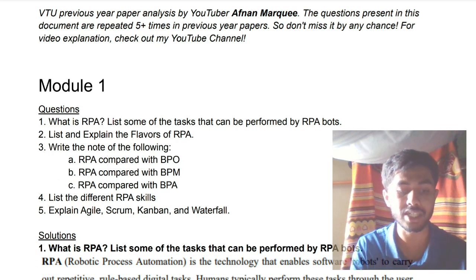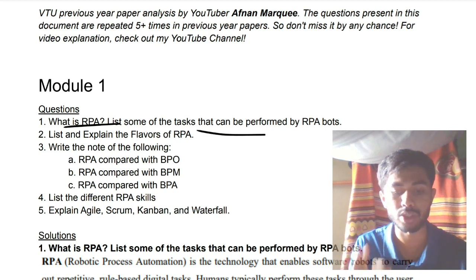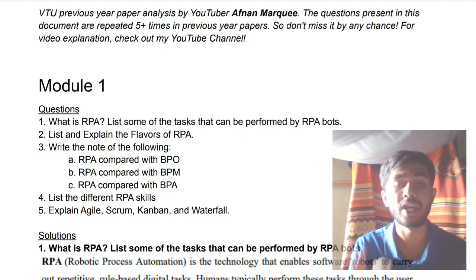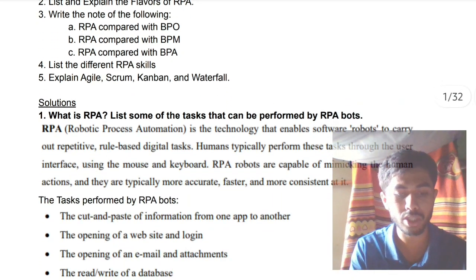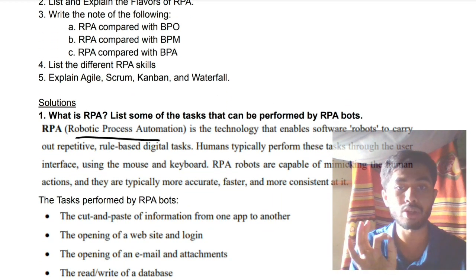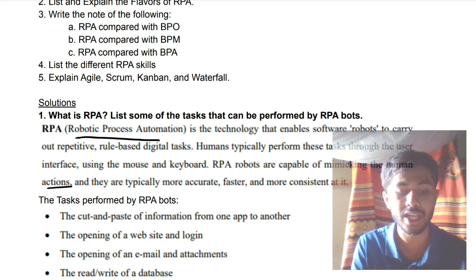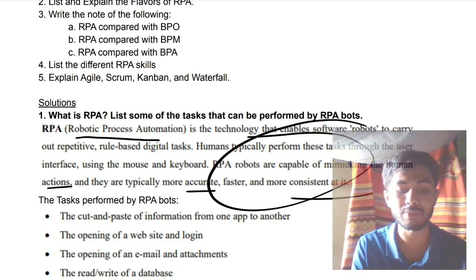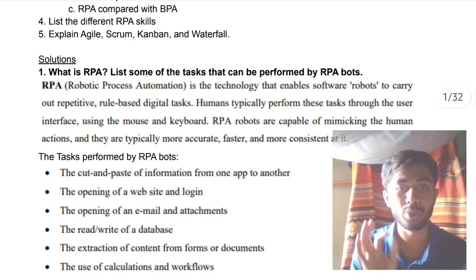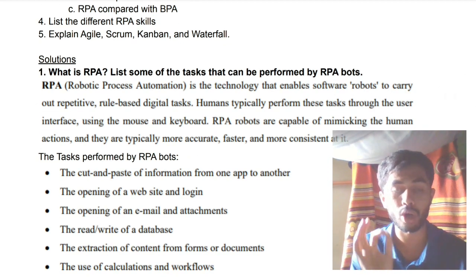Let's get started. What is RPA, and what are some of the tasks performed by robotic process automation bots? First you need to know the full form — RPA stands for Robotic Process Automation. It is a technology that uses automation to perform actions which humans perform, mimicking human actions, and it is obviously more accurate, faster, and consistent.